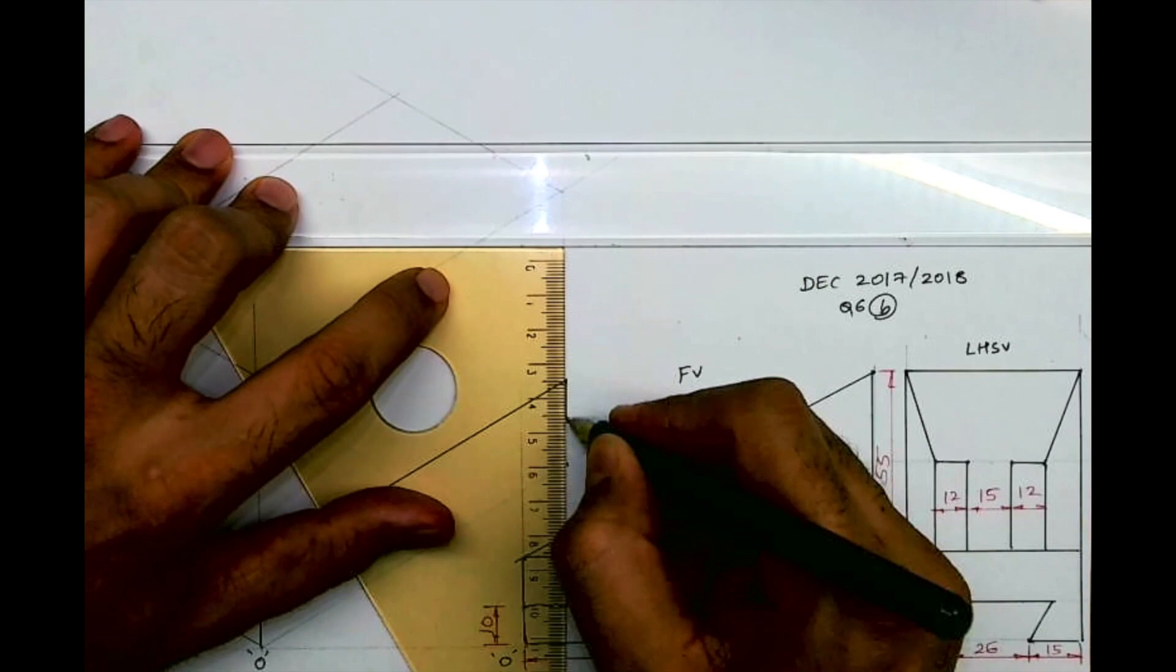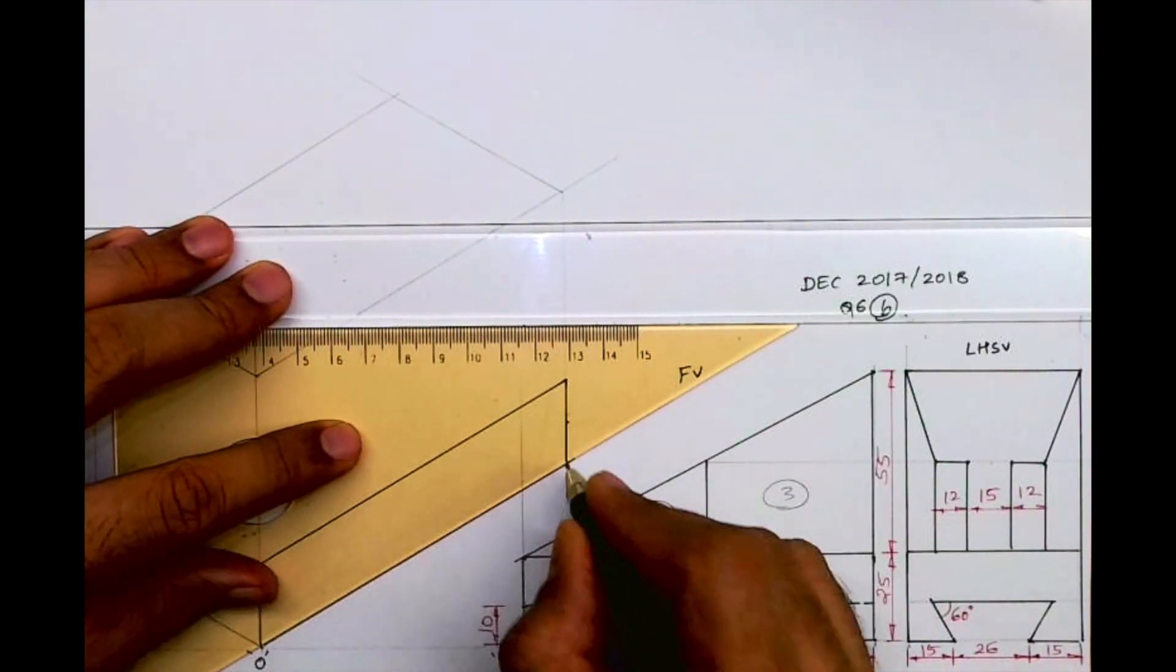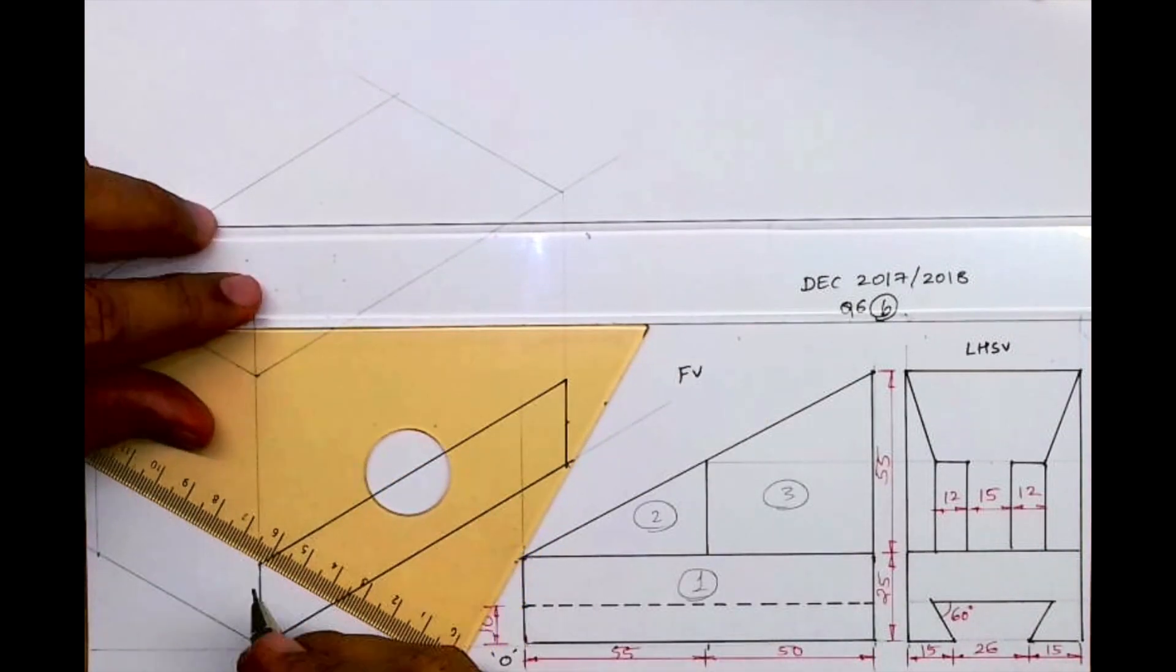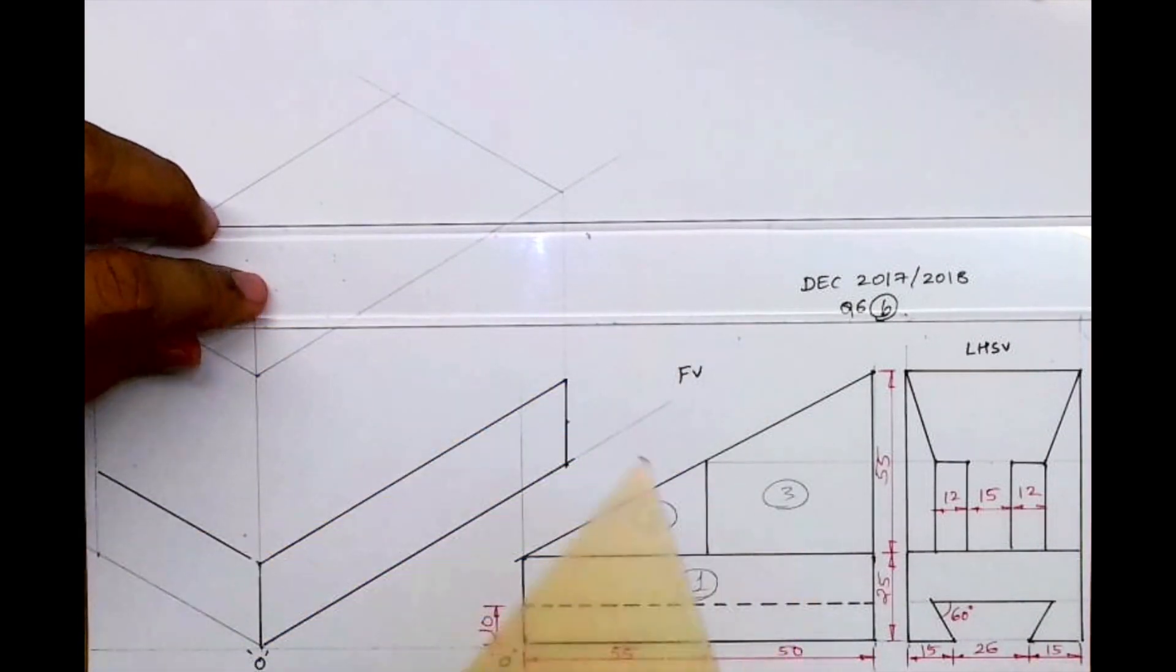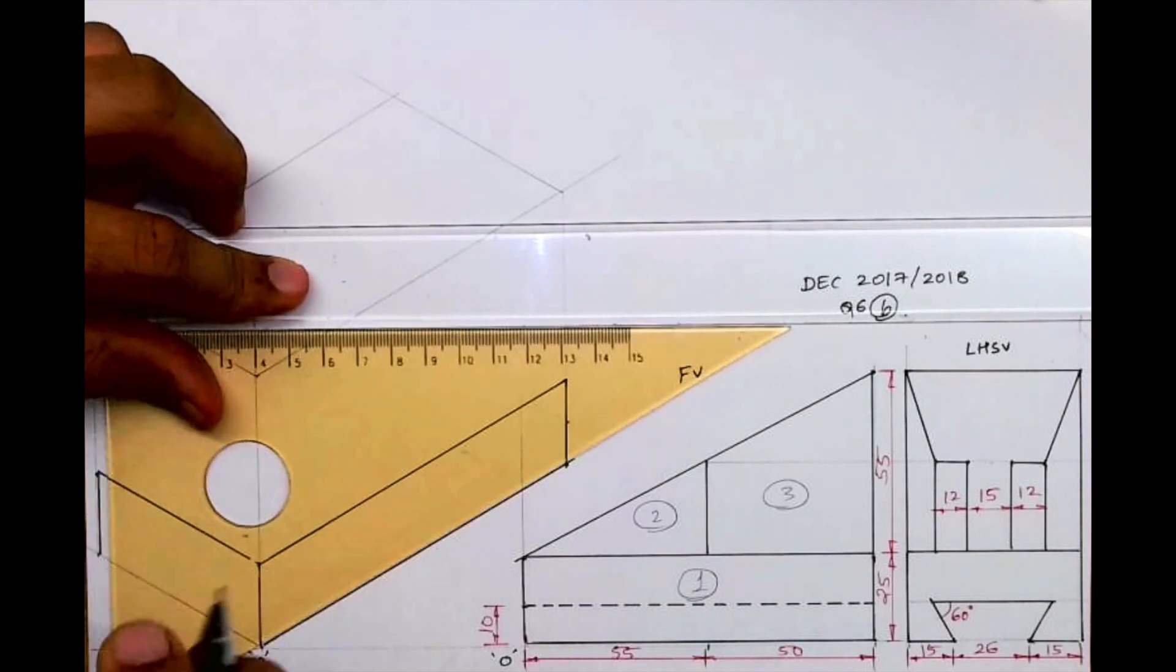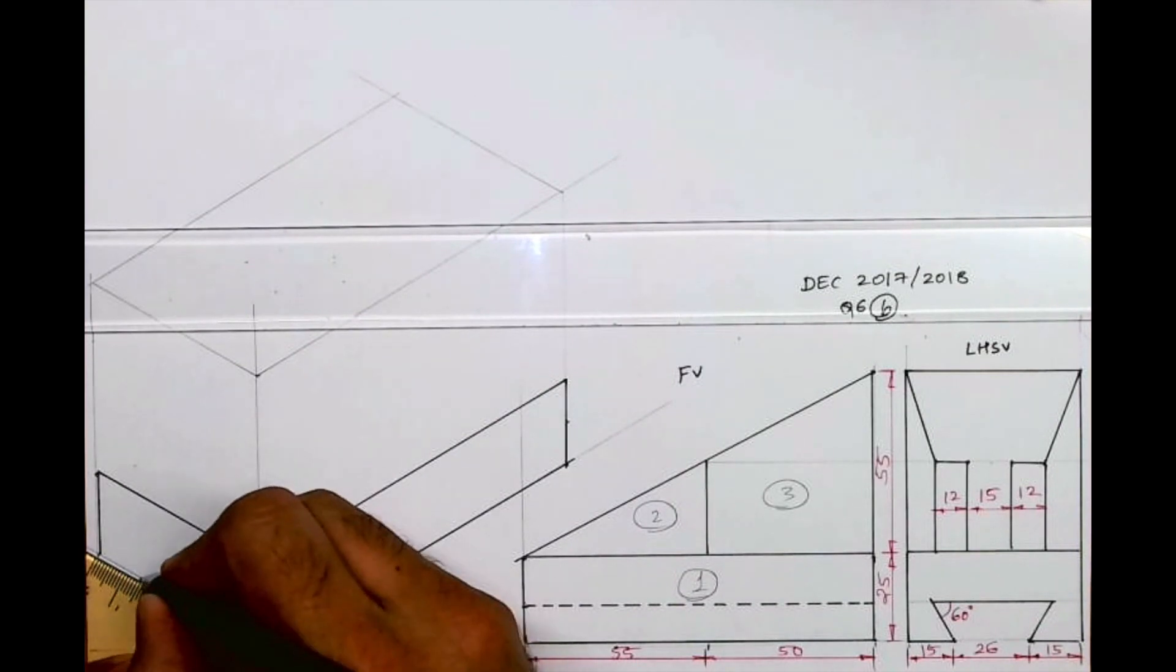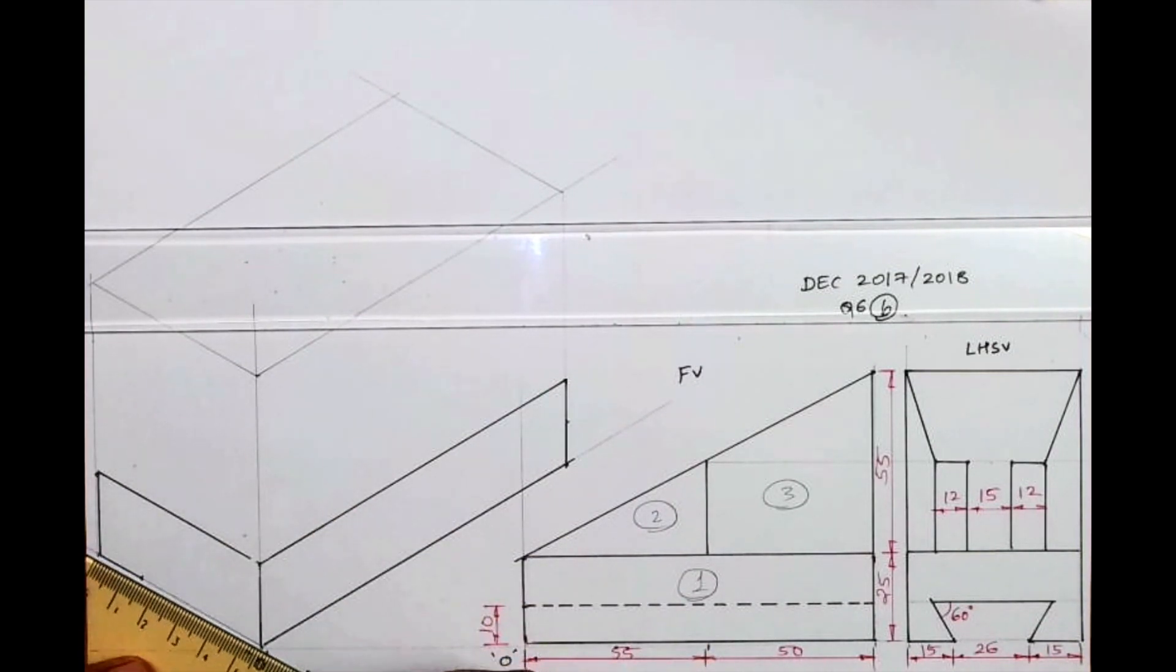If you see the front view of part one, then if you see the same thing is going behind, so I will take this part behind. How much behind? 56. Now over here, this distance is 15, 15, so I will mark 15 from here and 15 from here.